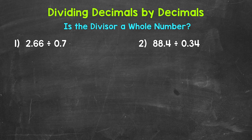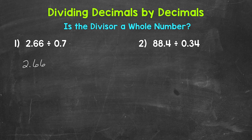Let's jump into number 1, where we have 2 and 66 hundredths divided by 7 tenths. The first thing we need to do is set this problem up so we can go through the division process. 2 and 66 hundredths is the dividend — the number we are dividing — and it goes under the division bar. 7 tenths is the divisor — the number we are dividing by — and it goes on the outside of the division bar.